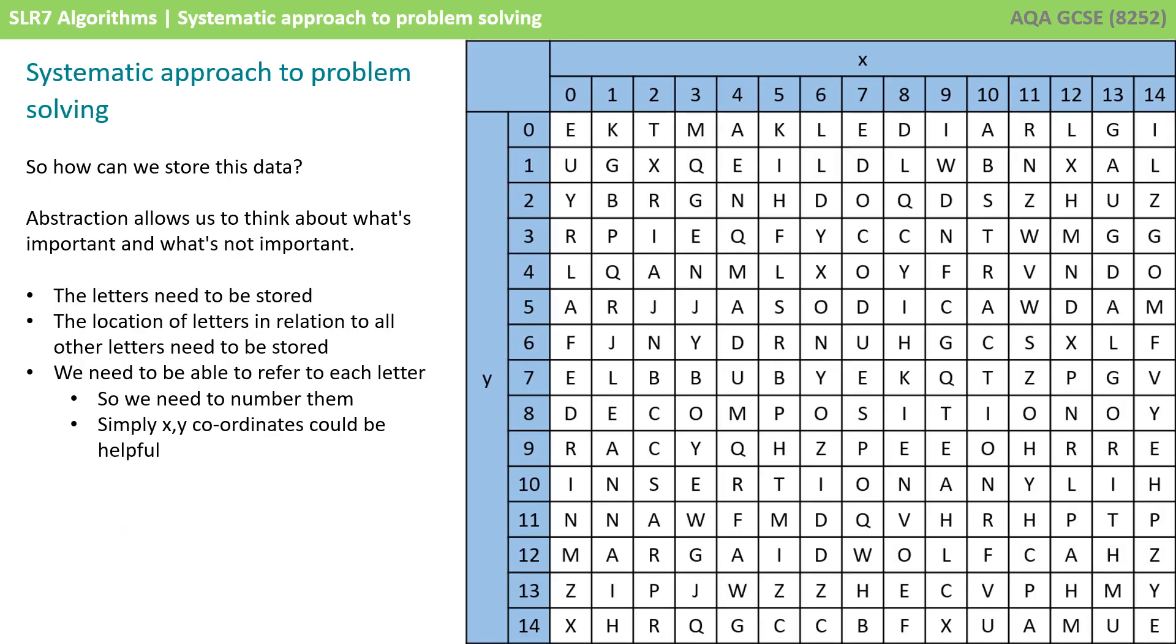So, the first thing that we're going to need to do is to think about how we can store our data. Now, if we use the concept of abstraction, we can think about what's important and what's not important in terms of the data we need to store. Now, clearly the letters need to be stored and the grid is also important because we need to know which letters are connected to which other letters. But we need to be able to refer to them somehow and therefore we could number them. It would also probably be useful if we could have some kind of x and y coordinates. So, when we're looking at this instance of the letter d, for example, we know that x is 7 and y is 5. And it will make deciding which letters to check next much easier because we can refer to them by their numbers or their coordinates.